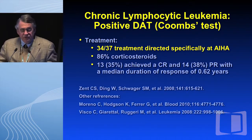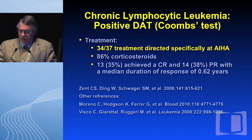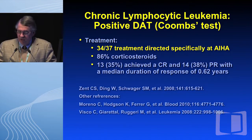How might these patients be treated? There are at least three references. In the Mayo series, 34 of 37 patients received treatment specifically directed at the autoimmune hemolytic anemia. 86% received corticosteroids, with a complete remission in 35% and a partial remission in 38%, and the median duration of response was 0.62 years.